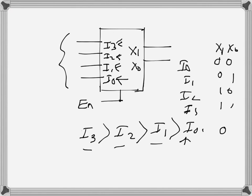If all lines are 0 and only i0 is 1, the output is 00. But if more than one line is active, the highest priority line's corresponding binary number appears at the output. For example, if i1, i2, and i0 are active but i3 is inactive, then since i2 has the highest priority among active lines, the output will be 10 — the binary encoding of i2.